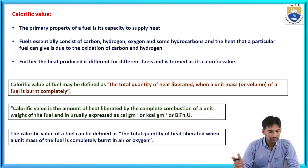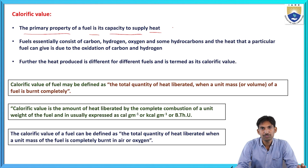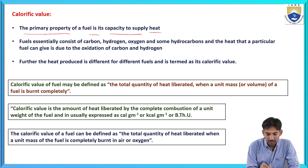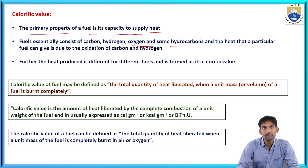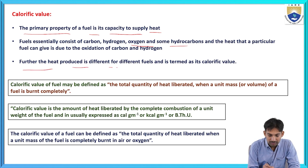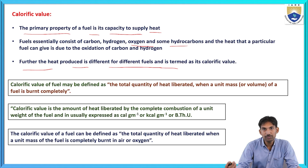Before going to this, we should know about calorific value. The primary property of a fuel is its capacity to supply heat. Fuels essentially consist of carbon, hydrogen, oxygen, and sulfur — these are the elements present in the fuel. On combustion, these elements produce heat. Different types of fuels produce different amounts of heat, and this heat is determined in terms of calorific value.